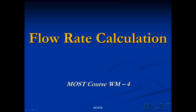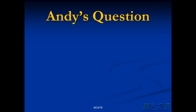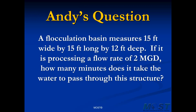Hello. We have a quick example problem for you here, courtesy of one of our subscribers, Andy. Andy has a question. On one of our most practiced tests, he looked at this problem and wanted to know how we got to the answer. A flocculation basin measures 15 feet wide by 15 feet long by 12 feet deep. If it is processing a flow rate of 2 MGD, how many minutes does it take for water to pass through the structure?